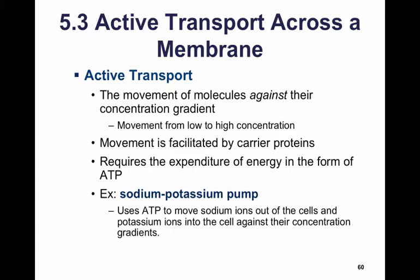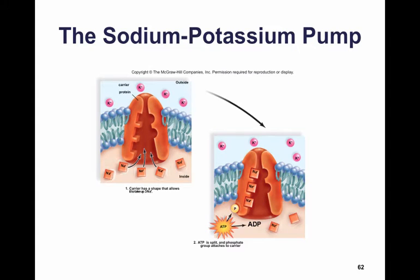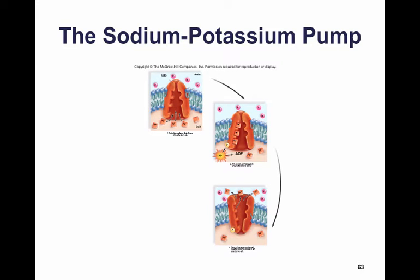An example of this is the sodium-potassium pump, which uses ATP to move sodium ions out of the cell and potassium ions into the cell against their concentration gradients. The carrier protein has a shape that allows it to take up to three sodium ions. The sodiums fit into binding sites, then ATP binds to the molecule and splits, with the phosphate group attached to the carrier. When the phosphate group is attached, it changes the shape and opens on the opposite side of the cell, allowing the sodium ions to leave. The shape of the sodium ion binding sites changes slightly so that they are released.